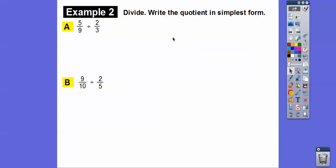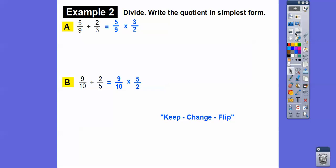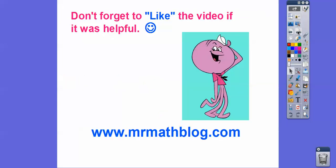Let's apply keep-change-flip to these examples. Keep the first fraction, change to multiply, flip it. Then cancel common factors. The 3s cancel: 3 goes into 9 three times. So we get 5 times 1 over 3 times 2, which is 5/6. For the second one: the 5s cancel and 5 goes into 10 twice. So 9 times 1 over 2 times 2 equals 9/4. Since 9/4 is an improper fraction, 4 goes into 9 two times with 1 left over, giving 2 and 1/4.